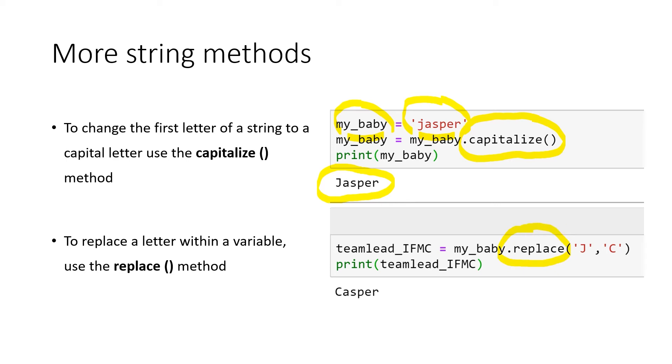Replace method is also straightforward. First, you apply it to the variable, and then in those brackets over here, you define which letter has to be changed for what letter. So in this case, we change j and substitute it with c to get casper.